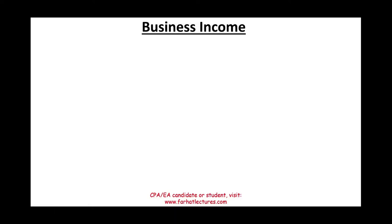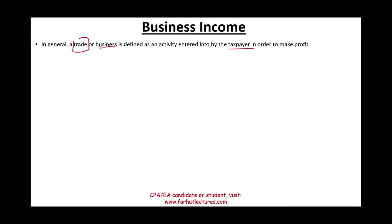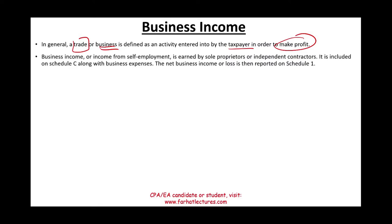Welcome to this session on the concept of business income. Business income is when the taxpayer is engaged in a trade or business for the purpose of making a profit. All businesses start with an idea — to make profit from skills you have. Another way to make money is to work for a company as an employee, getting paid through a W-2. As a self-employed individual, you work as an independent contractor or sole proprietor, making money from your own effort, not as an employee.